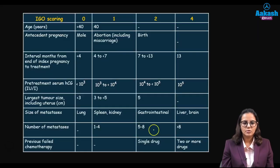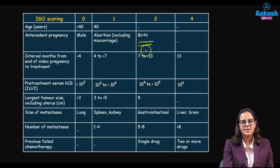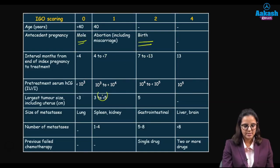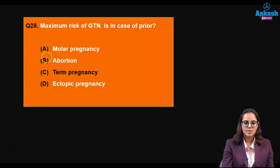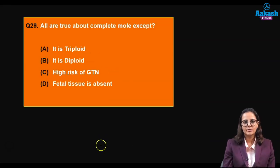What is the maximum risk factor for gestational trophoblastic neoplasia? If the patient had a previous live birth and then develops GTN, this carries the highest risk. A previous molar pregnancy carries the lowest risk. Therefore, the answer is a previous term pregnancy.